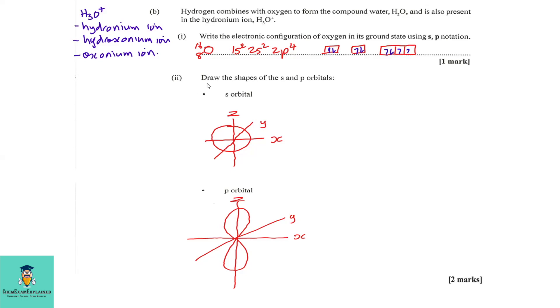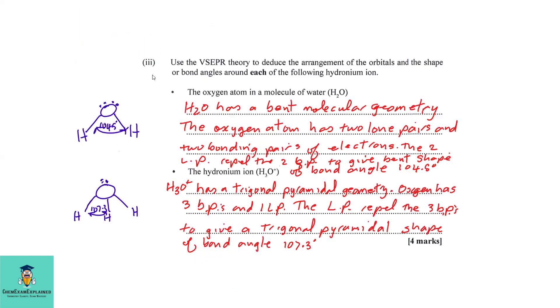Part B2: Draw the shapes of the s and p orbitals. So, the s orbital is spherical. And of course, we draw the axes. And for the p orbital, it is a dumbbell.